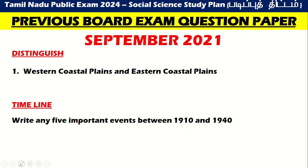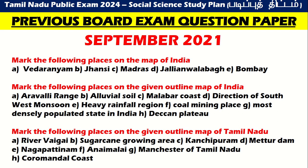September 2021: distinguish between western coastal plains and eastern coastal plains. Then timeline and give reasons. Timeline: write any 5 important events between 1910 and 1940. Western Ghats and Eastern Ghats coastal plains. September 2021 map — map of India is 5 marks and map of Tamil Nadu is 8 marks, so total 13 marks.